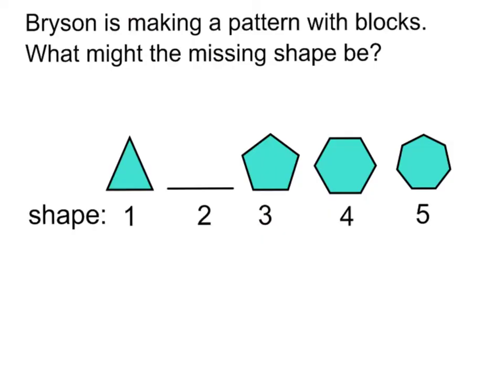My third example is this. Bryson is making a pattern with blocks. What might the missing shape be? Let's look close. Shape one has one triangle. Shape two, what would that shape be? Shape three has a pentagon. Shape four has a hexagon, which has six sides. And shape five has a septagon, which has seven sides. Based on what we think might happen, what do you think would be my missing number of sides for shape two? Go ahead and pause the video and draw out your answer.